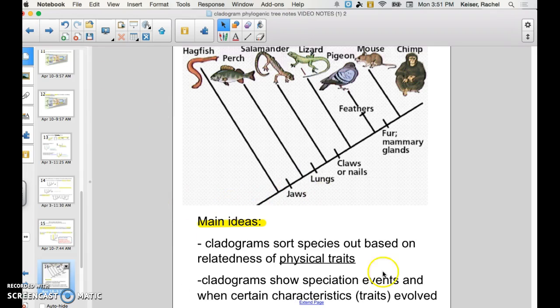So the main ideas from this video. Cladograms sort species out based on relatedness of physical traits. And these little nodes represent when certain characteristics arose and it defines a certain clade. So all branches beyond this one represent a clade that all has claws or nails. Cladograms also show speciation events and when certain characteristics or traits have evolved.